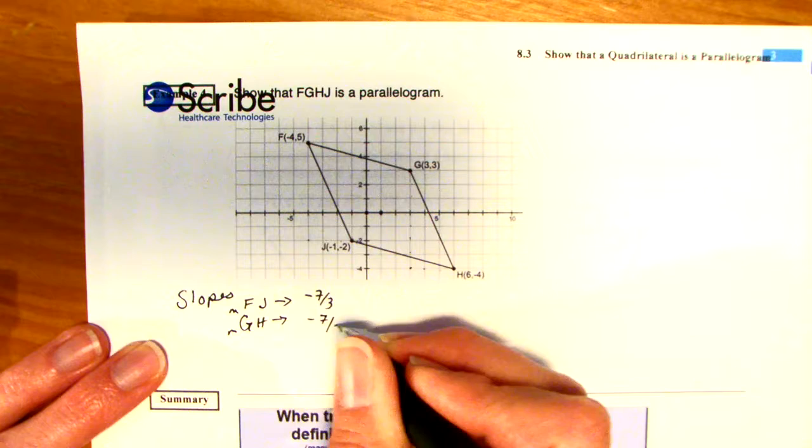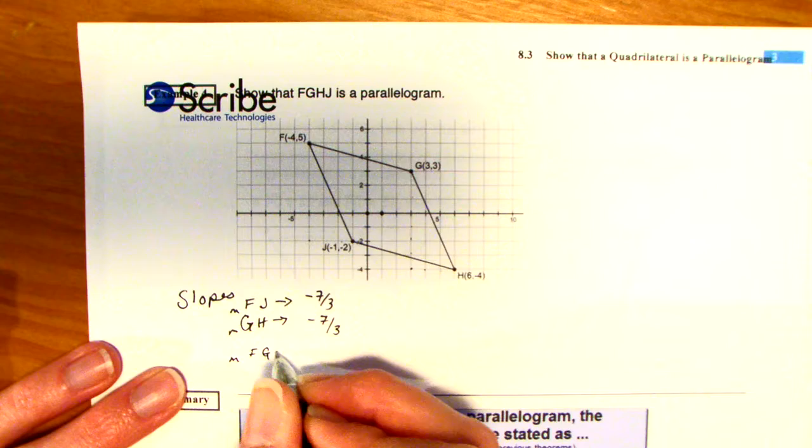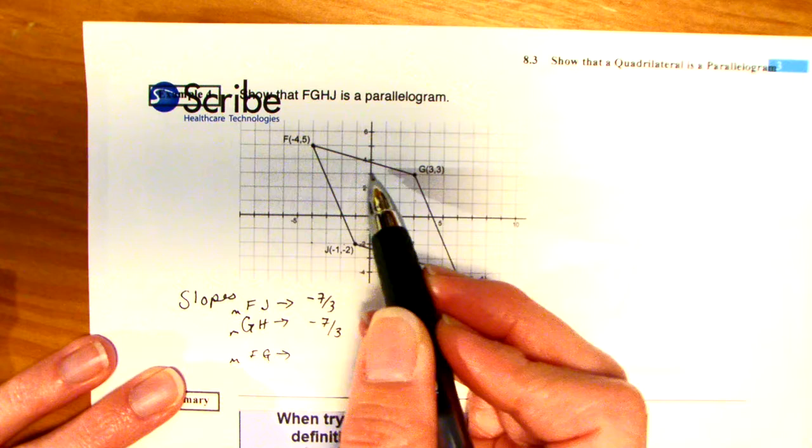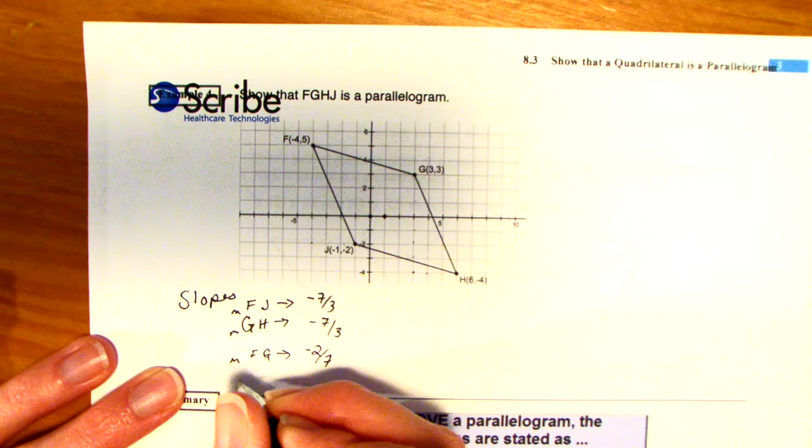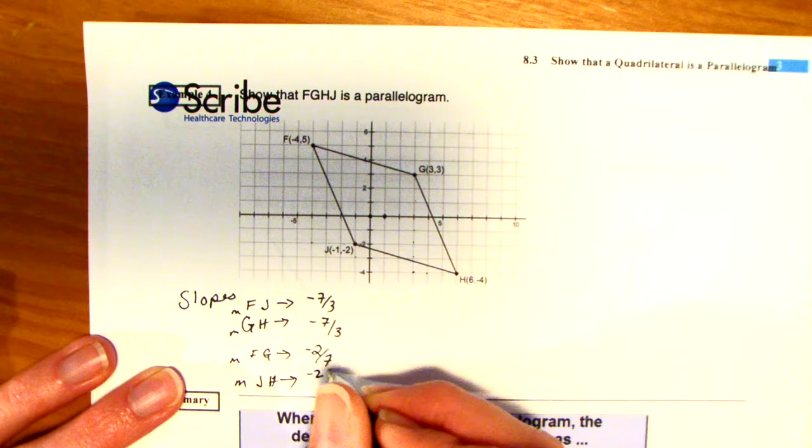Yep. So far, so good. Now, let's find the slope of FG. So, I have to go down 1, 2 over 1, 2, 3, 4, 5, 6, 7. Down 2 over 7. And then, finally, the slope of JH. I have to go down 1, 2 over 1, 2, 3, 4, 5, 6, 7. So, there we go. Opposite sides have the same slope.